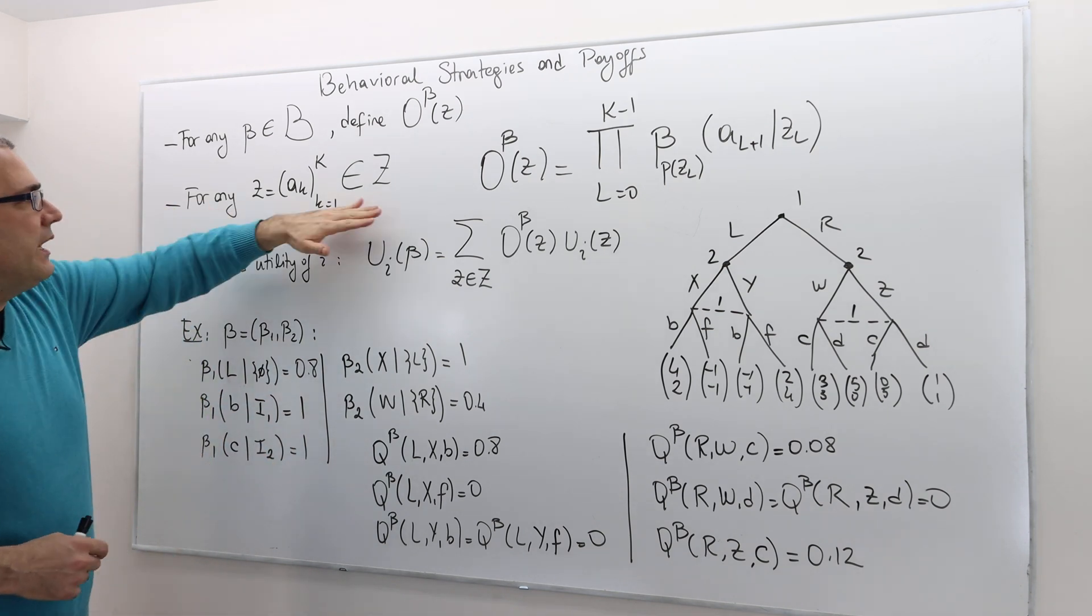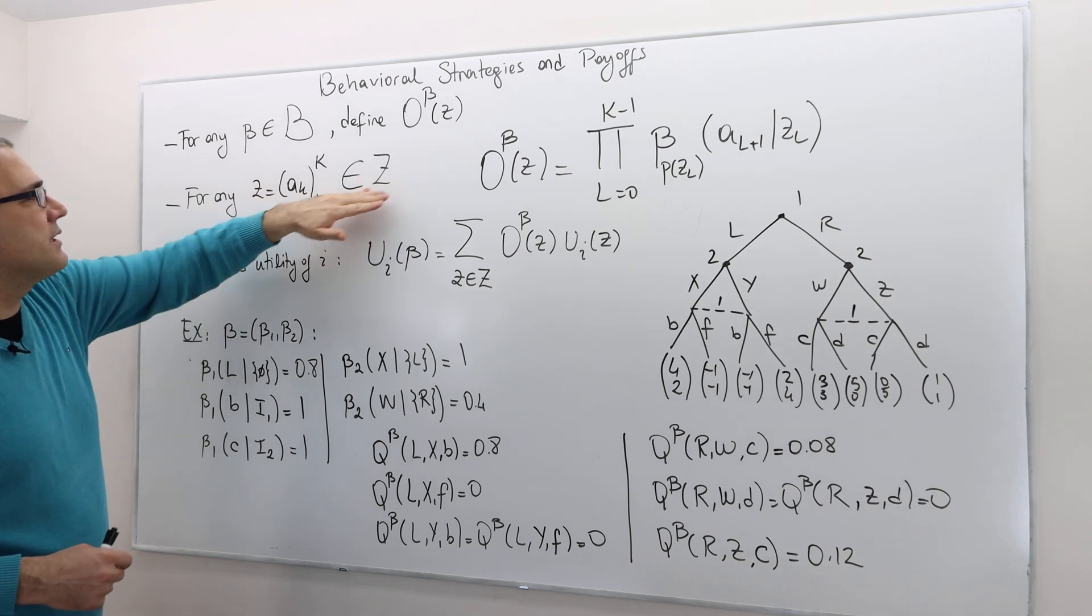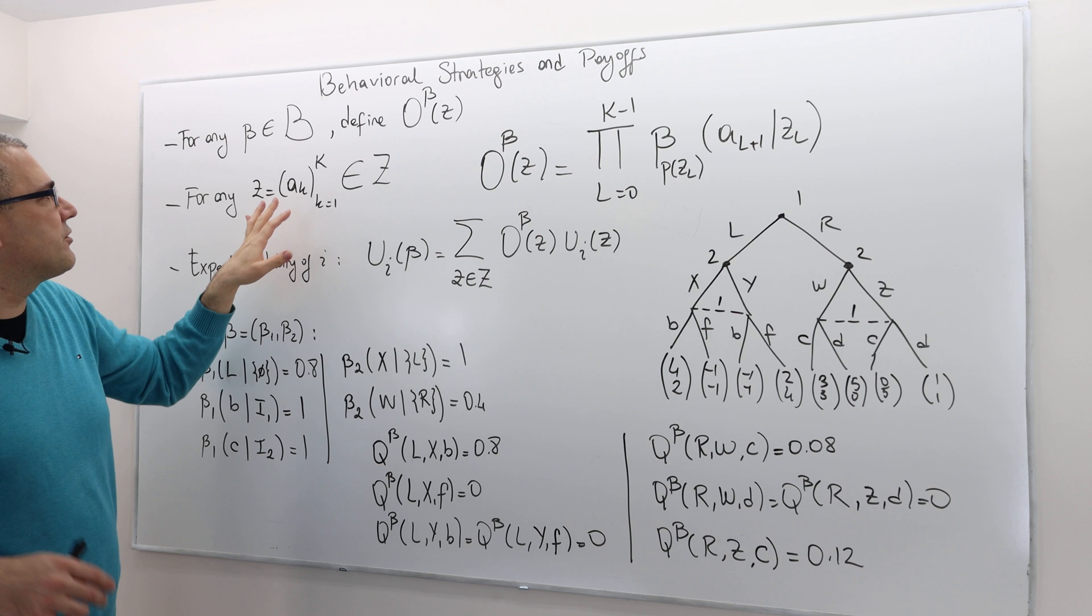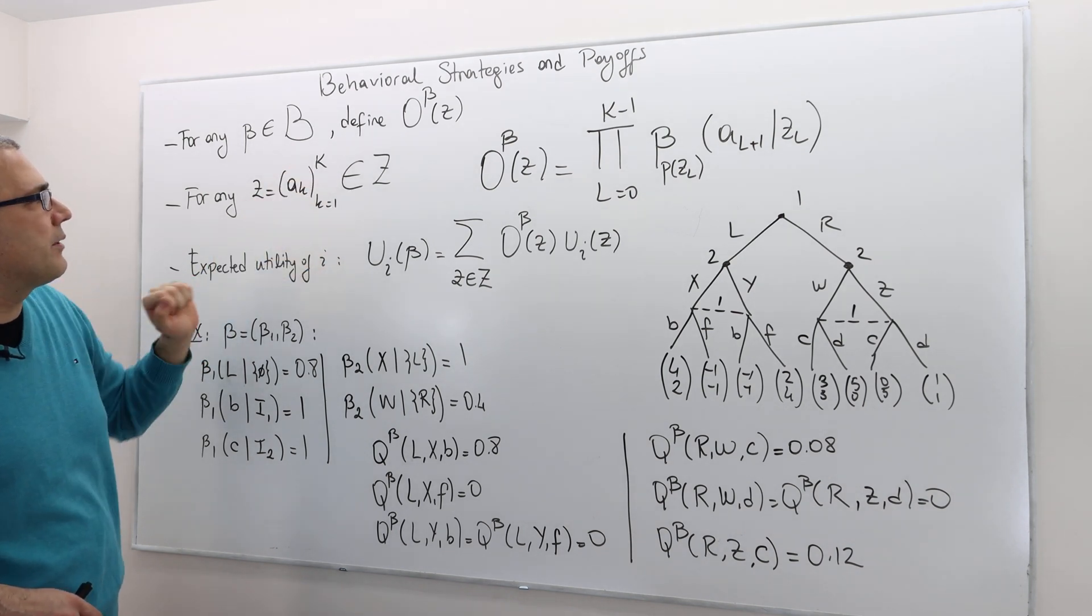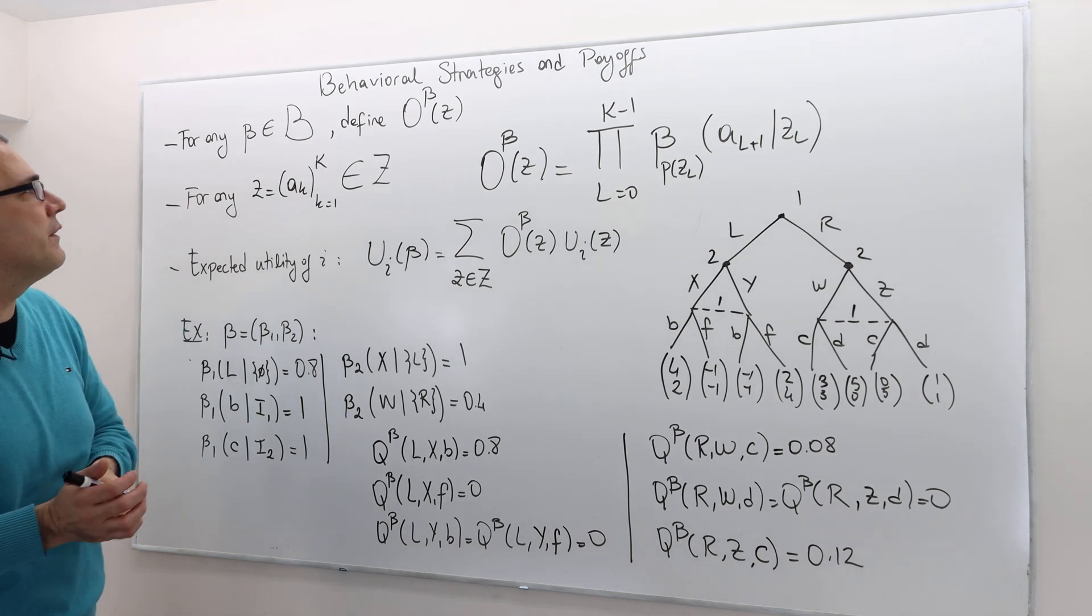For any terminal history Z, which is element of Z, we denote the terminal histories as a sequence a sub k, k from 1 to capital K. K can be finite or infinite.